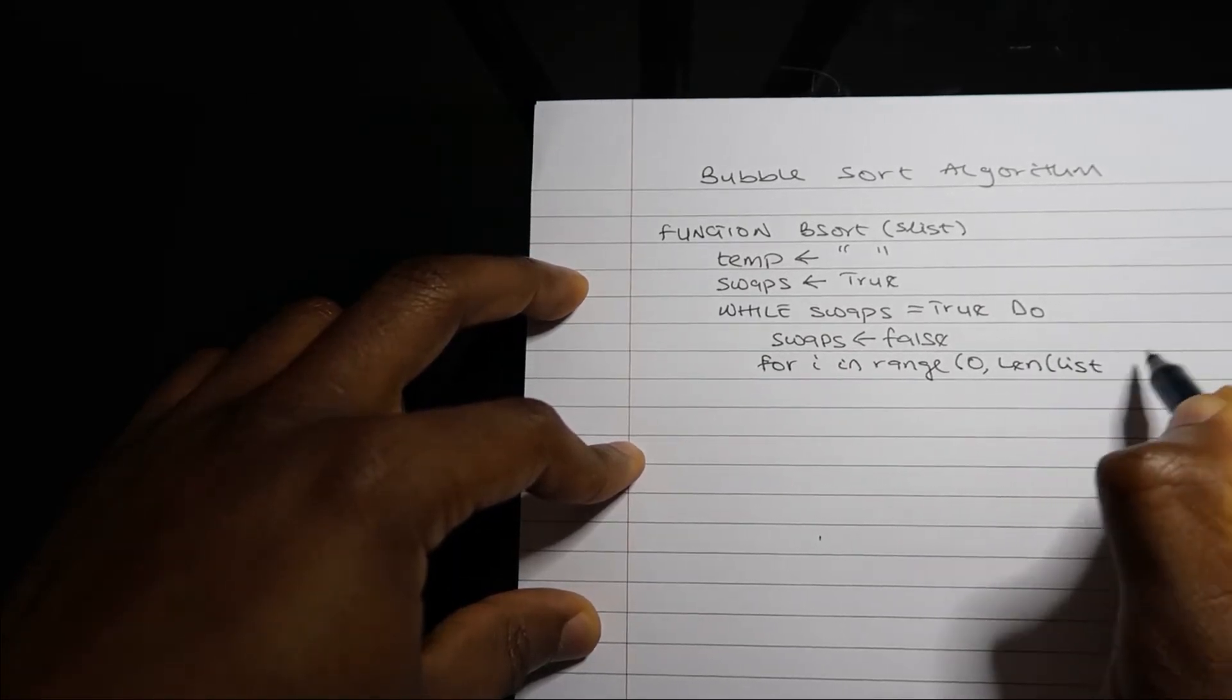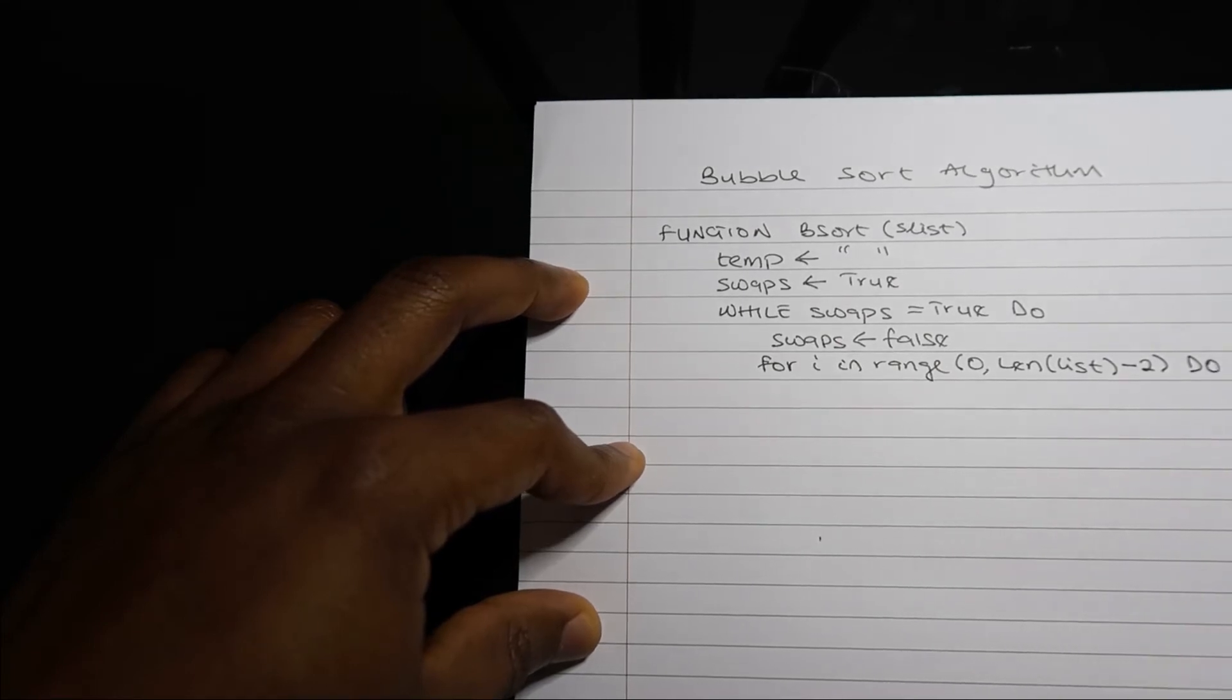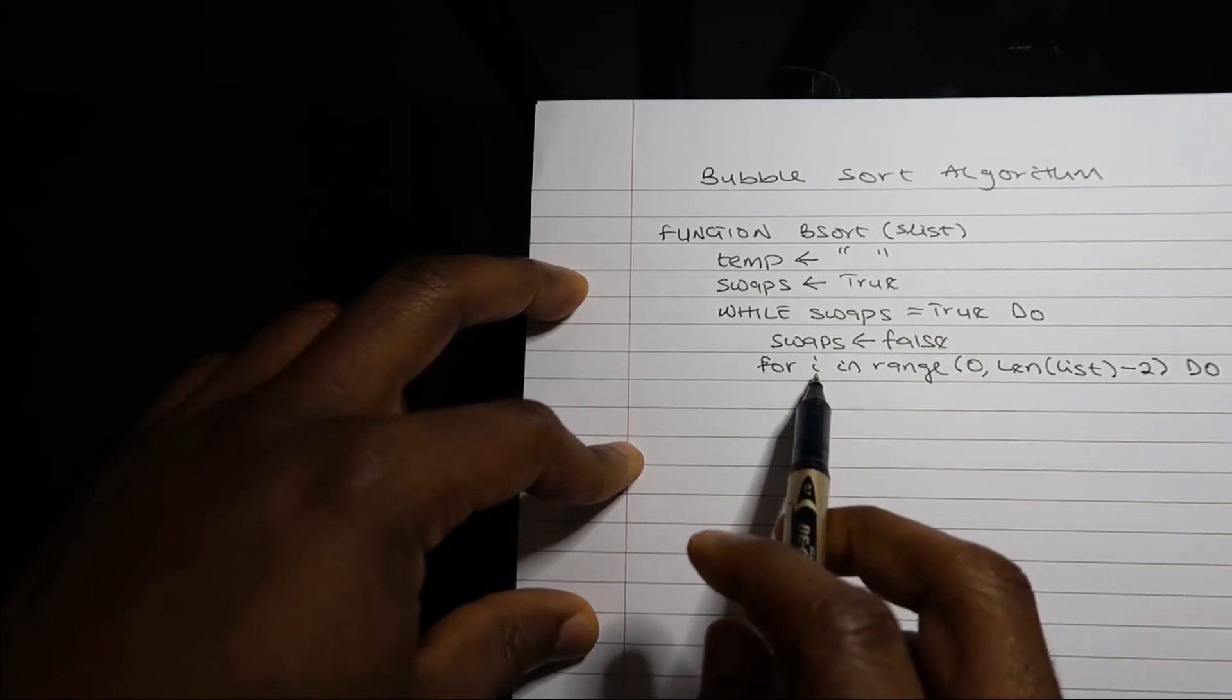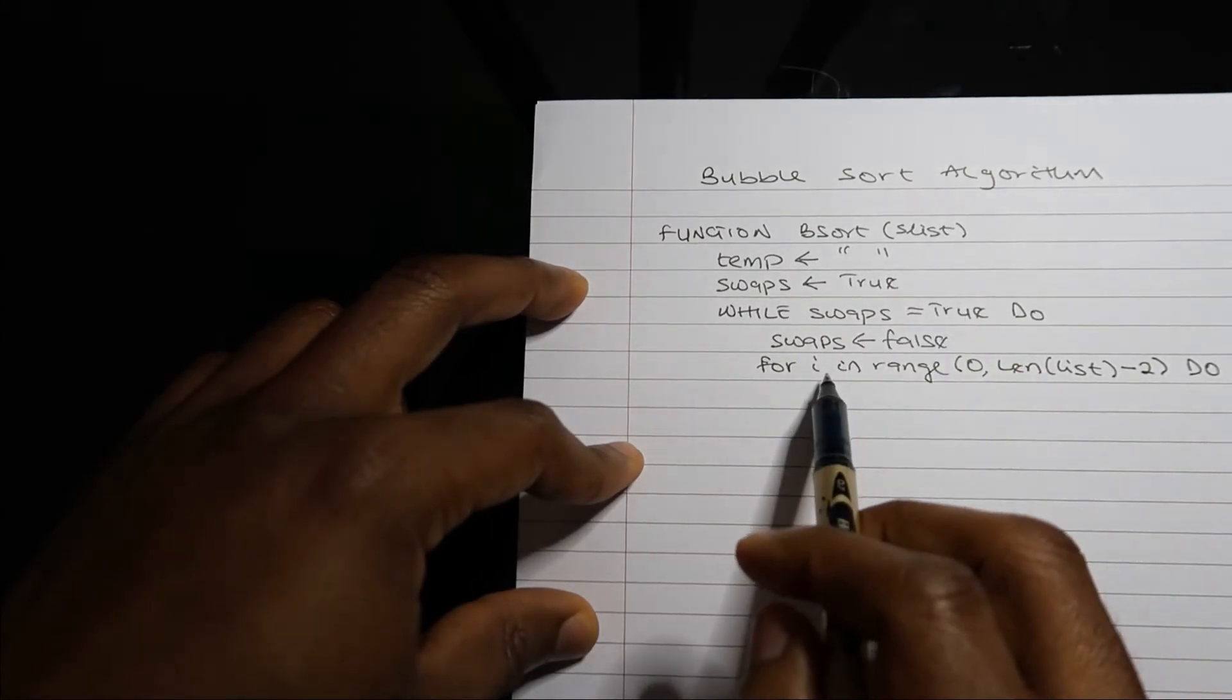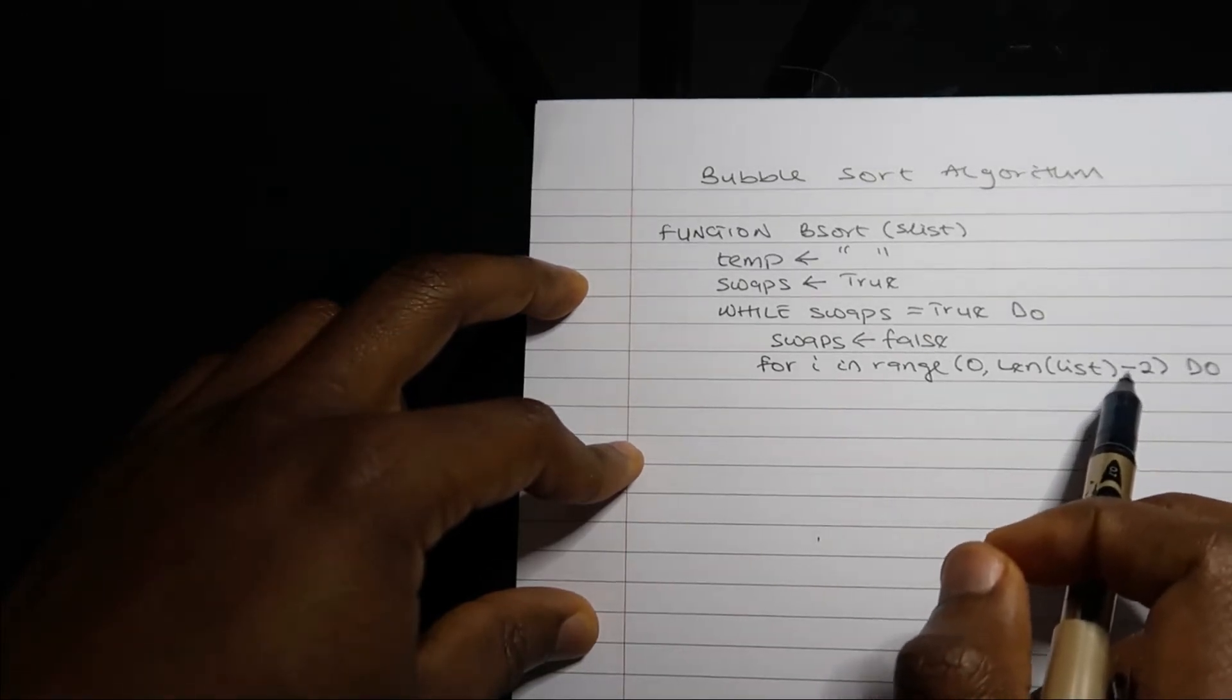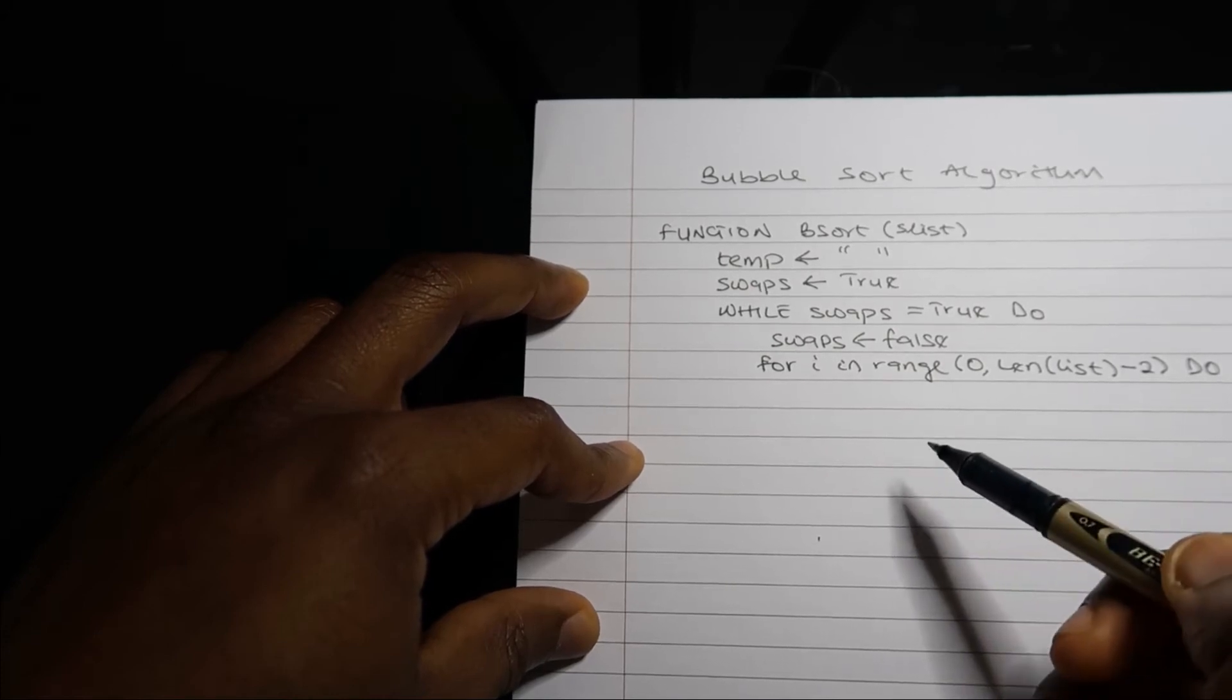The length of my list minus two. I'm saying minus two because as I progress in my algorithm, I would need to be comparing the index position slist[i] to slist[i+1]. So if I'll be doing slist[i+1], I don't want to go above. I want to be two steps below the length of my list.